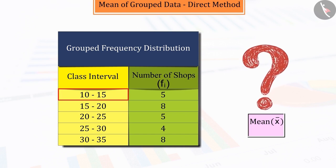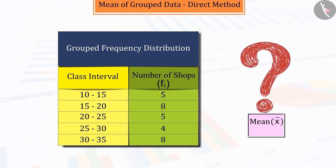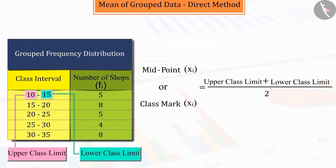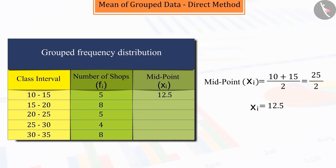Since we have to find the mean with the help of this data, we will need a point that will represent each class interval. Therefore, we can consider the midpoint or the class mark of each class interval as its representative, which is represented by xi. Here, from the table, we can see that the midpoint for the class interval is 12.50. And similarly, let us find the midpoint of all class intervals.